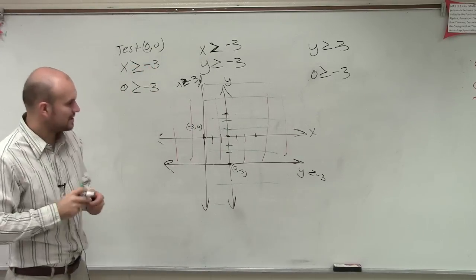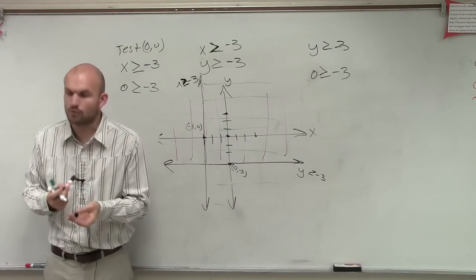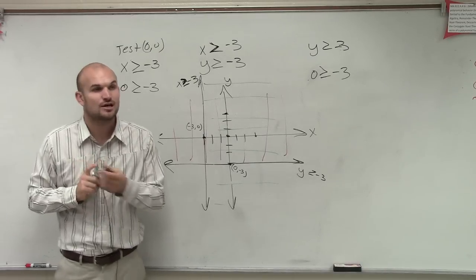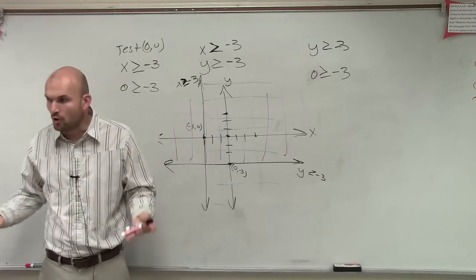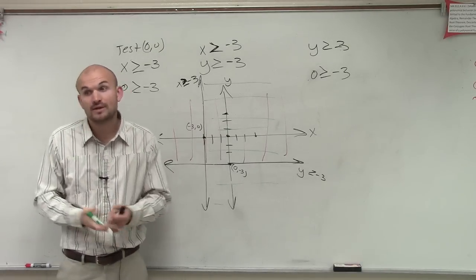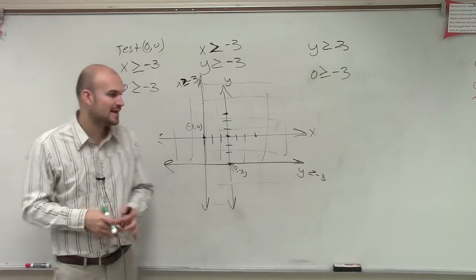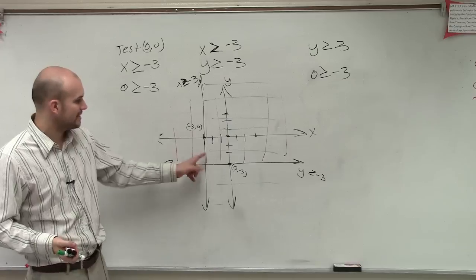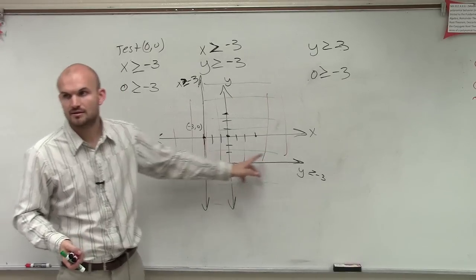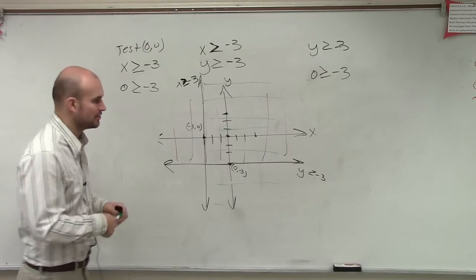However, ladies and gentlemen, we're not concerned about where it's shaded. We're only concerned about where the shading intersects. Where is it true for both inequalities? And what we call that region is the feasible region. And the only region where it's true for both of them is right in this region. Everybody see that? So that's going to be your solution or your answer.